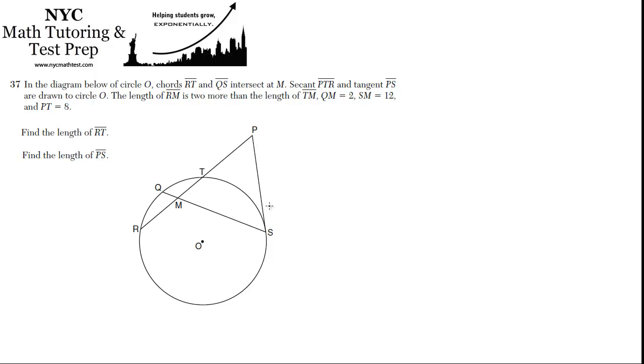And tangent PS, so PS only touches at one point, only at point S. And if you're drawn to circle O, the length of RM is two more than the length of TM. So let me label these as we go. So if I call TM X, then the length of RM is X plus 2.